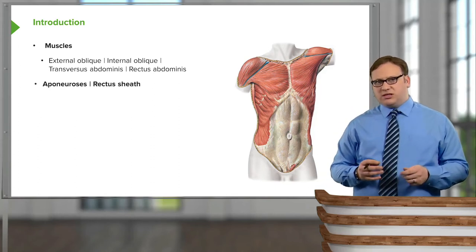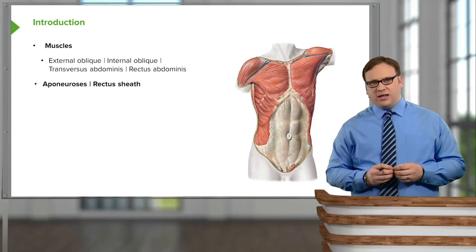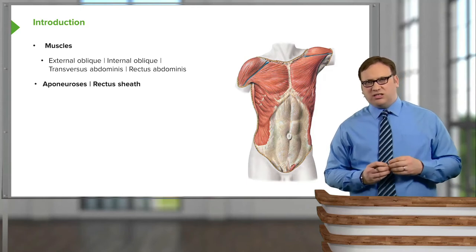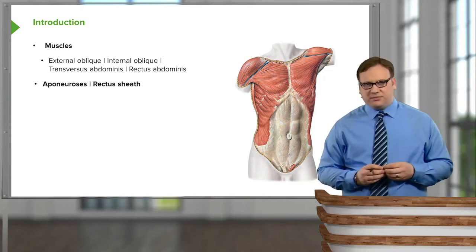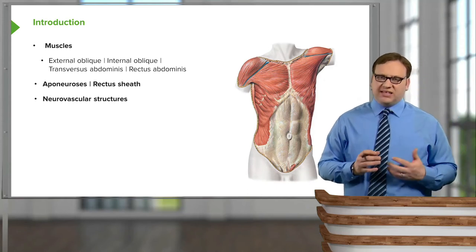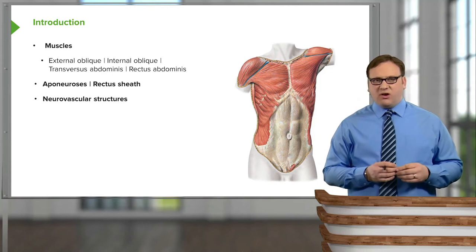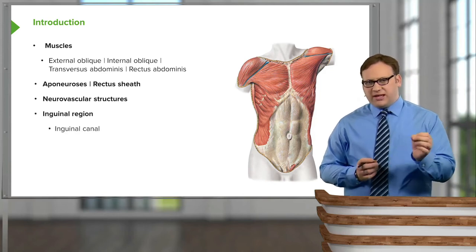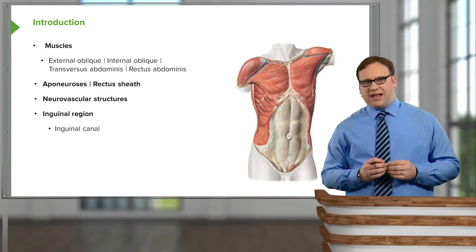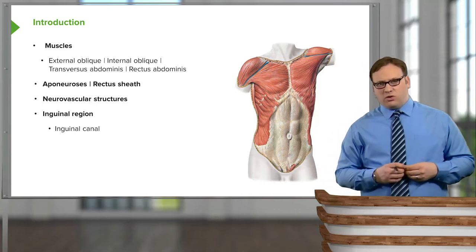We'll also look at some aponeuroses — the flattened tendons of these muscles — and an important structure known as the rectus sheath. Throughout the lecture, we'll look at important neurovascular structures: the arteries, nerves, and veins of this region. Then very briefly, we'll introduce the inguinal region and specifically the inguinal canal, which we'll look at in more detail in the next lecture.